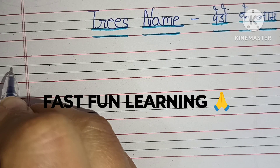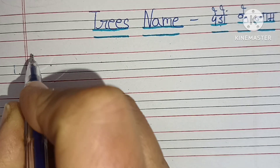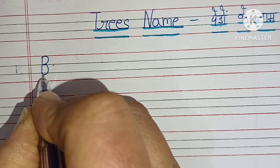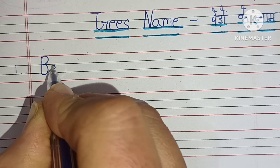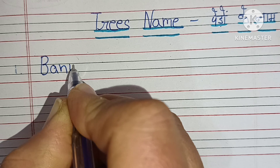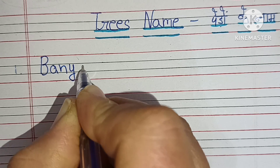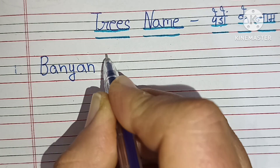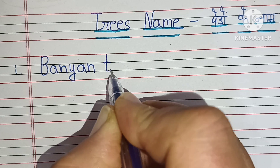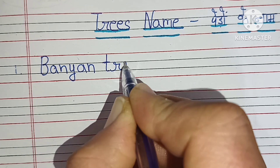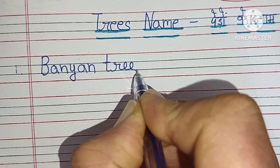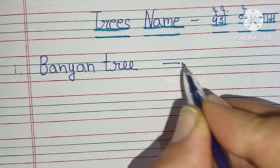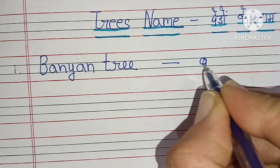First one is Banyan Tree. B-A-N-Y-A-N, Banyan Tree. Banyan Tree means Bhargat Ka Paid.